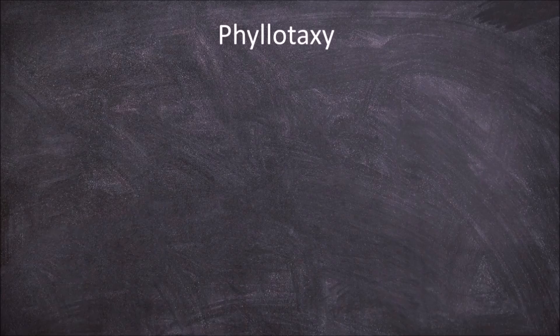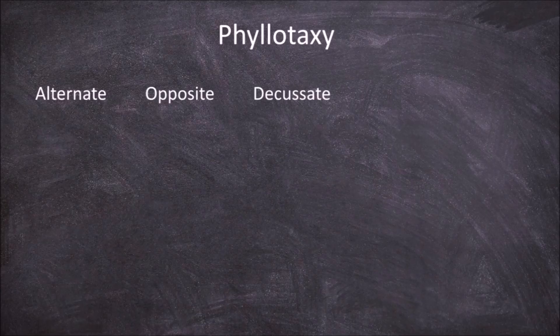There are five main forms of phyllotaxy: alternate, opposite, decussate, whorled, and spiral.